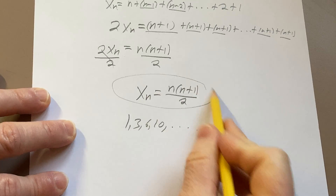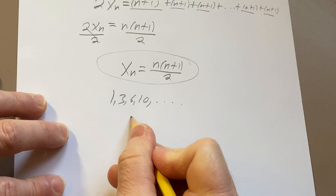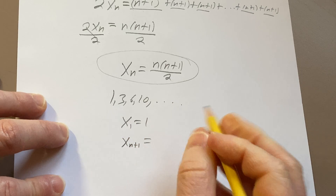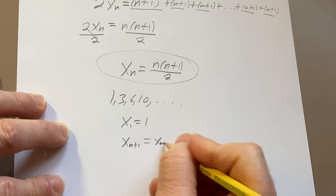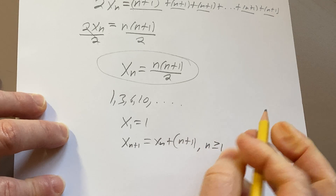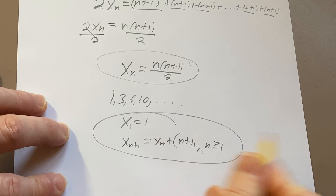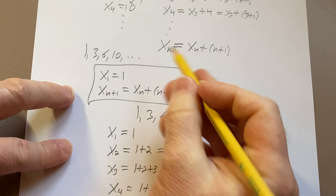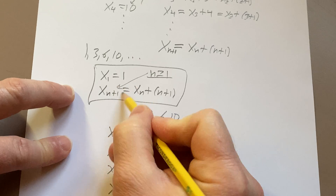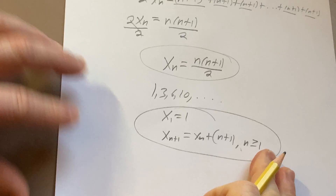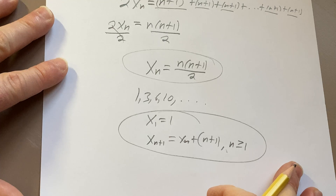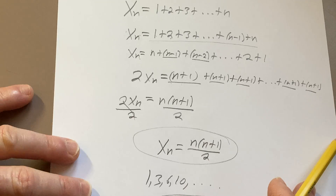So that's one formula: x sub n = n(n+1)/2. And our recursive formula was x1 = 1 and x sub n+1 = x sub n + n+1, where n is greater than or equal to 1 — that's really important to mention in the recursive definition. So that's the video: a sequence, a recursive definition, and an explicit formula. It's always really fun to play around with.